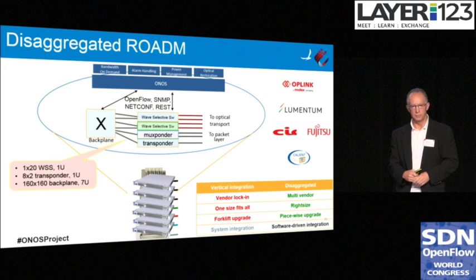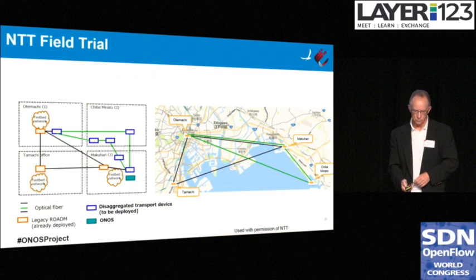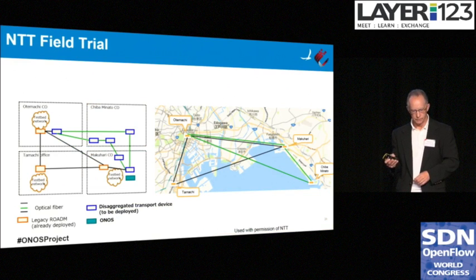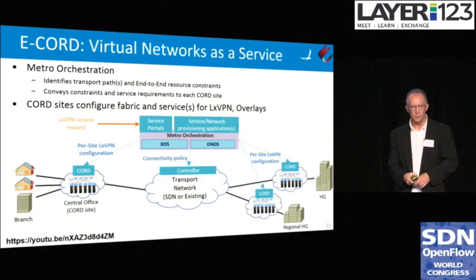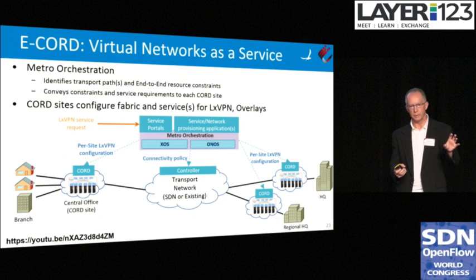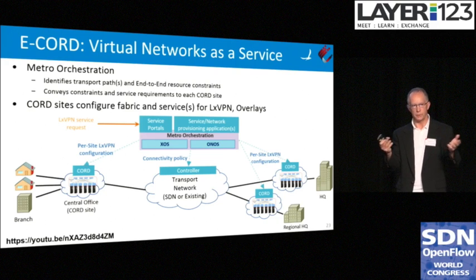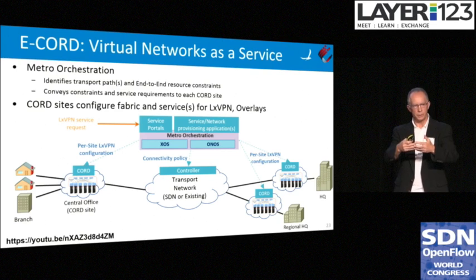Disaggregated ROADM will be used as part of an NTT field trial over the next six to nine months. You can see the map of where it is in Japan, where they're using some of the disaggregated transport devices — and that's an ONOS-controlled network. E-CORD: if you have CORD running in central offices and you take a metro area that might have four or five of them, E-CORD ties those together and brings you the functions you might be used to with MEF — your ELAN services — and lets you coordinate through a centralized location the ability to request L2, L3 VPNs and overlays.